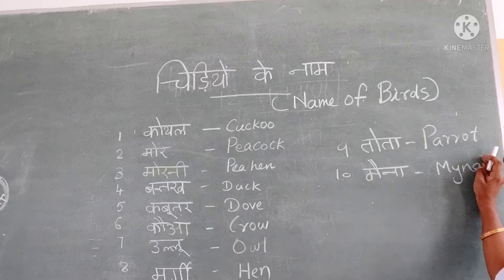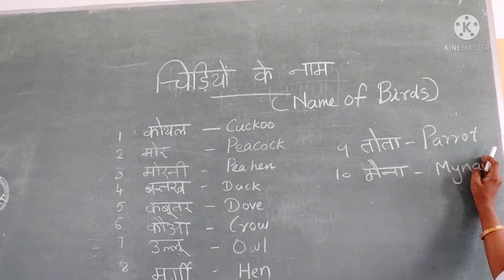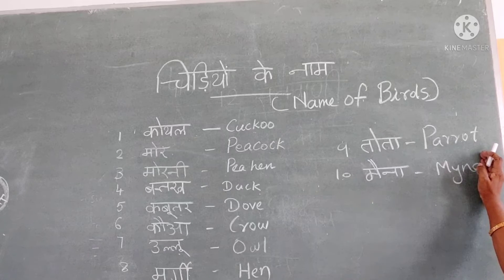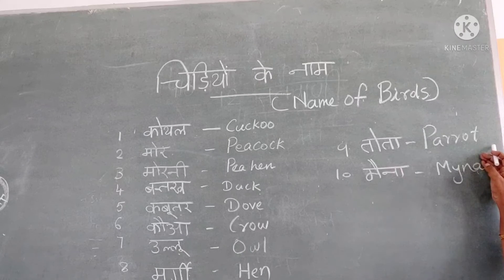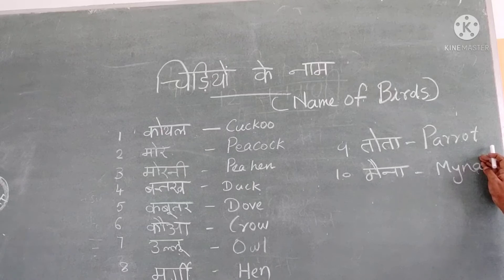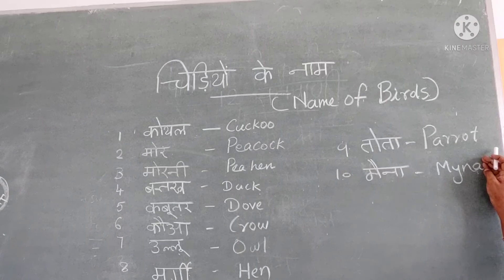Study all these words well. Koyal — kukku. Mor — peacock. Moorni — peahen. Batak — duck. Kabutar — dove. Kawwa — crow. Ulu — owl. Murgi — hen. Tota — parrot. And then Maina — Maina. Study all these words very well.